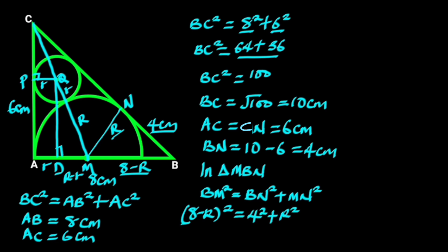Expanding (8 minus r)² gives us 64 minus 16r plus r², and 4² is 16. So 64 minus 16r plus r² equals 16 plus r².